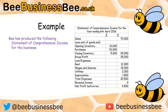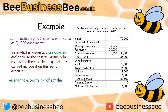You should hopefully be able to work out how these figures are being calculated. Now, B has actually realised that there are some mistakes that have been made in that statement of comprehensive income. Rent is actually paid two months in advance at £1,000 each month. This is what we call a prepayment, because the cost will actually be related to the next trading period but we can't include it on this set of accounts, because even though we paid it in advance, it's not linked to this trading period. The rent is paid two months in advance, so for two months of that rent it has to be apportioned to the next trading period.